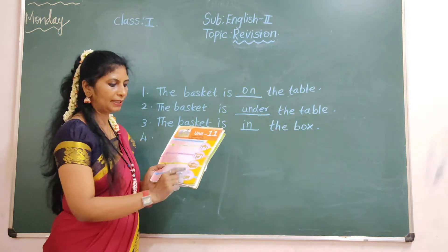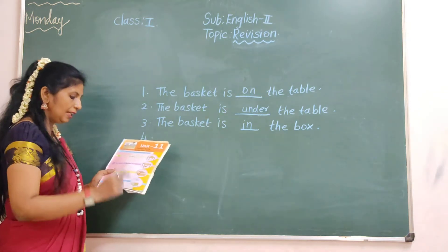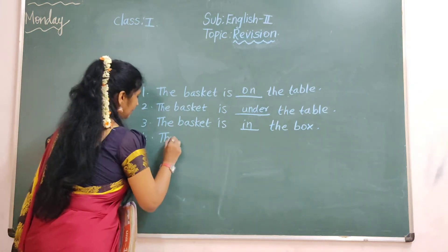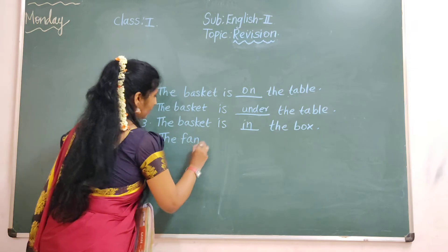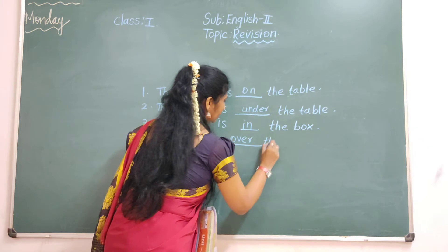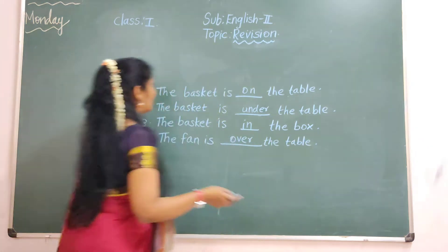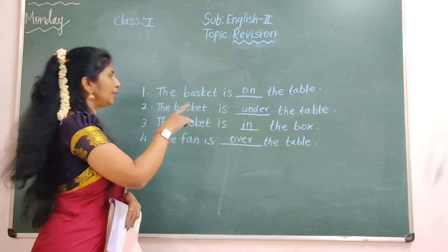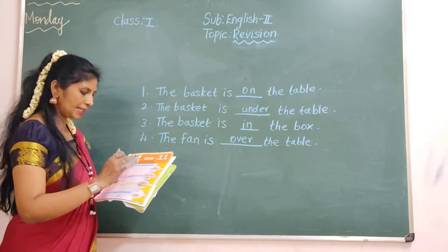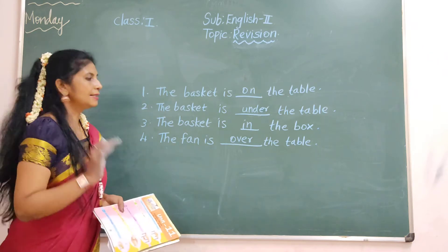Fourth one. The fan is dash the table. The fan is over the table. See, look at the picture — that is the fan. The fan is over the table. Over the table. Review: the basket is on the table, the basket is under the table, the basket is in the box, the fan is over the table.